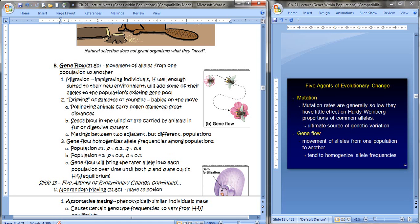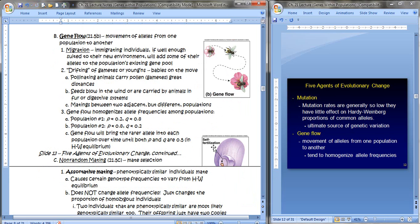But see, what gene flow does is that it homogenizes allele frequencies among the populations. For example, if population A has P of 0.2 and Q of 0.8 and the reverse in population 2, if they come into contact with one another, gene flow would just bring the rarer allele into each population over time until both P and Q are 0.5, or in other words equal, and then that population would be in Hardy-Weinberg equilibrium.